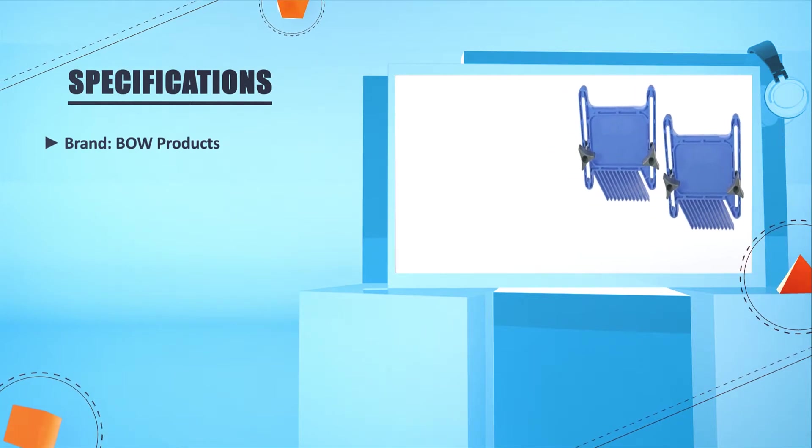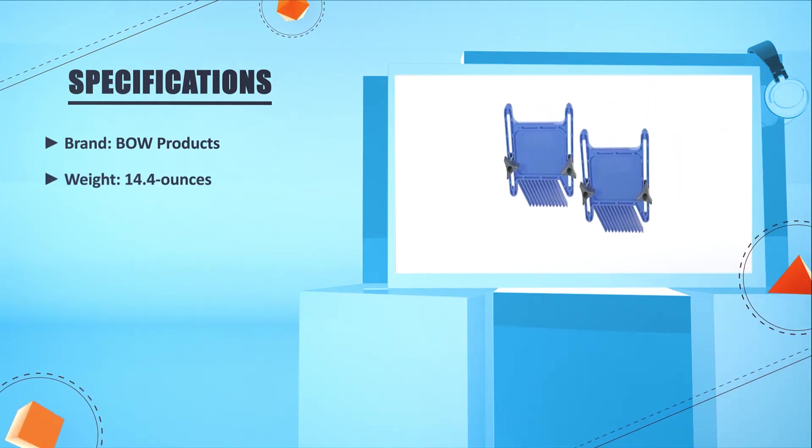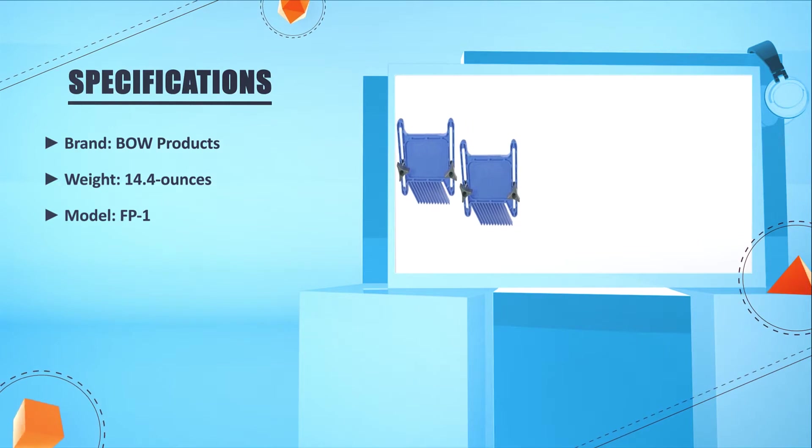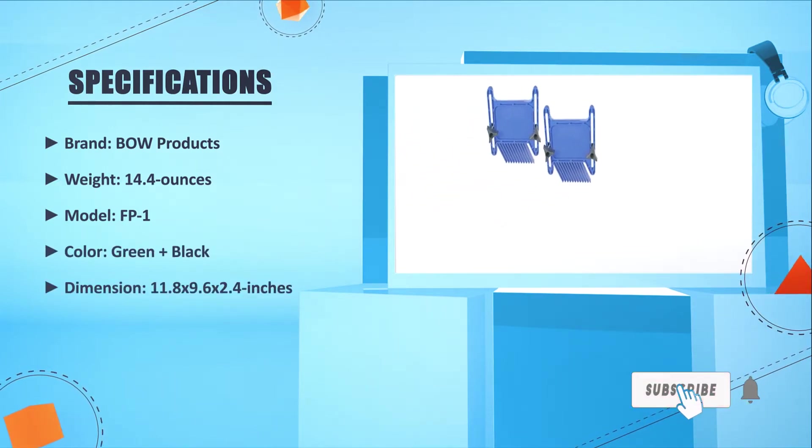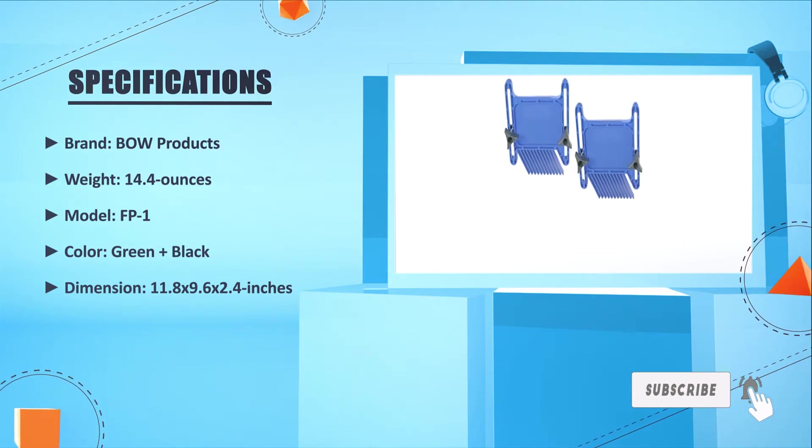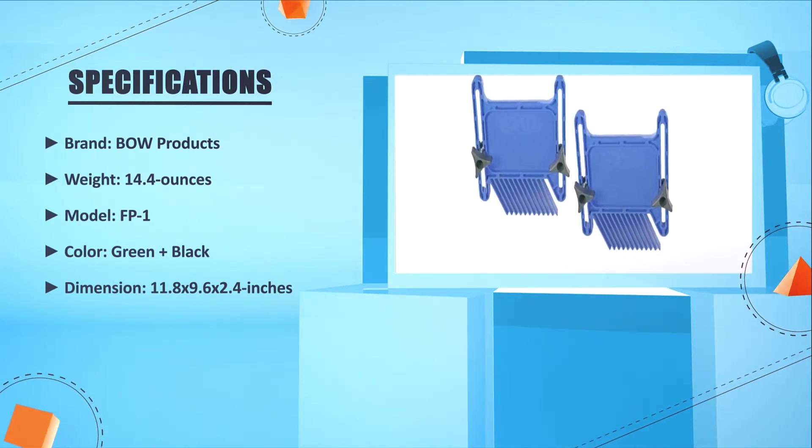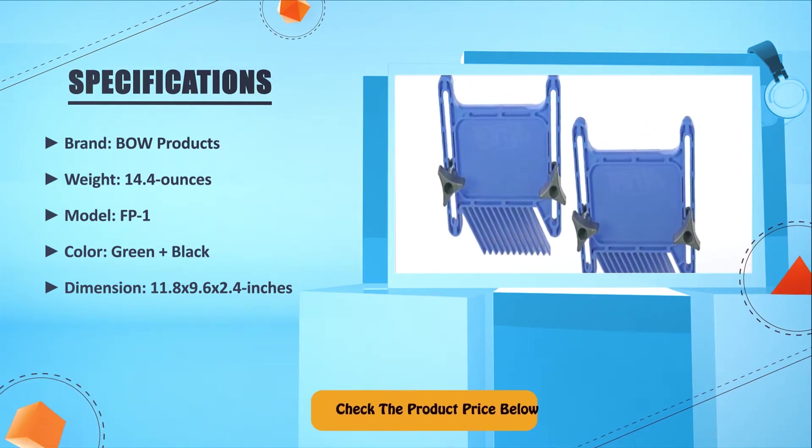Brand: Bow Products. Weight: 14.4 ounces. Model: FP1. Color: green plus black. Dimension: 11.8 by 9.6 by 2.4 inches. Check the product price below.